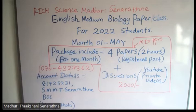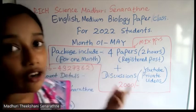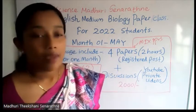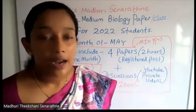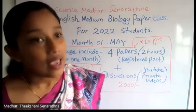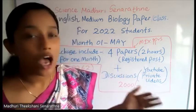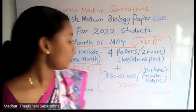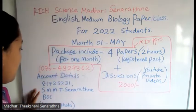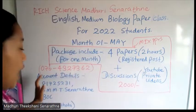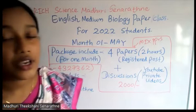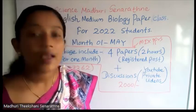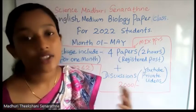This is the account number for your payments. Once you have done your payment, please take a photograph or any evidence — it may be an online payment receipt or bank slip — and submit it to this number. Along with that, you have to send me your name, postal address, email address, and your school.